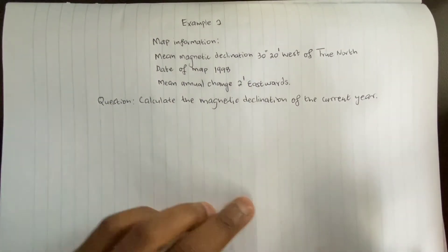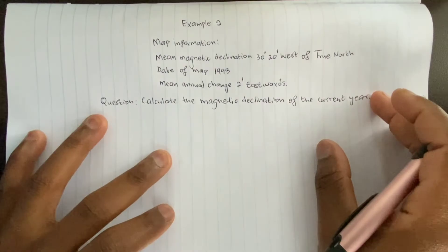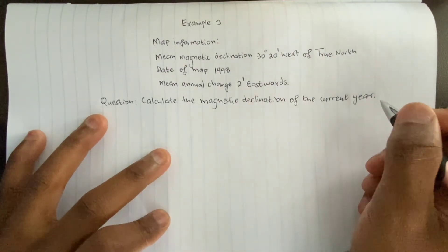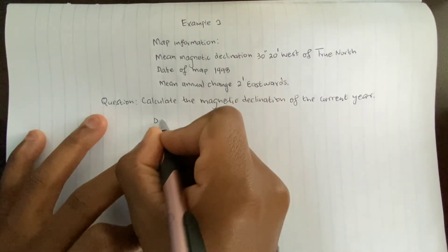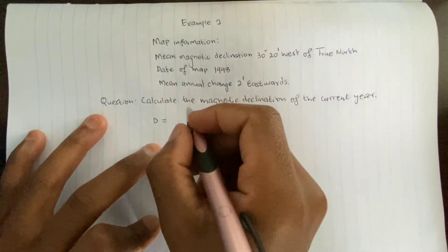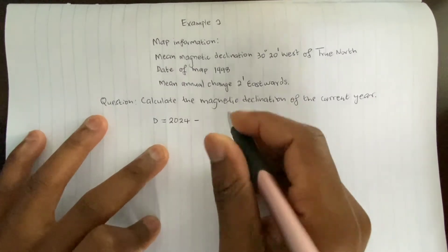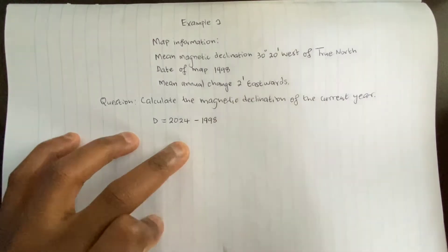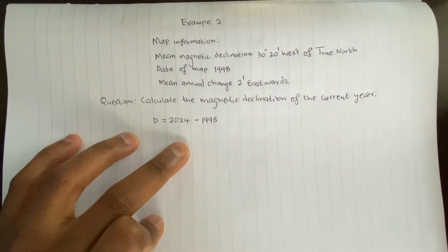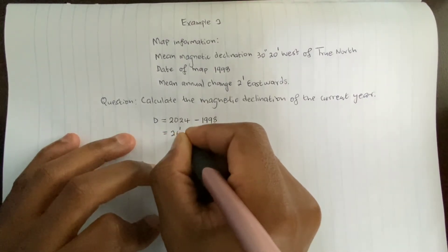We follow the same steps as in example one. Using abbreviations to save time: D for difference in years. So that is 2024 minus 1998, which equals 26 years.